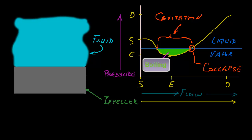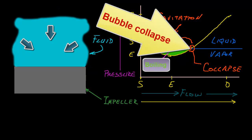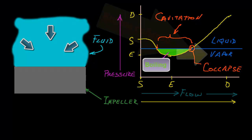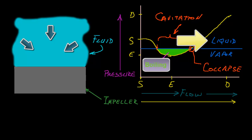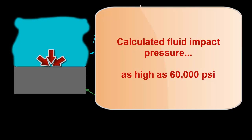Similar to the collapsing balloon, as the pressure of the fluid increases during the pumping cycle, at some point the vapor pressure inside the gas bubble is unable to support the external fluid pressure of the surrounding liquid. At that point, the gas bubble collapses or implodes under the pressure — in other words, the gas bubble vapor quickly changes phase back to a liquid state. The collapsing gas bubble results in a high-velocity, localized fluid-impact shockwave on the surface of the part. By some estimates, that fluid impact pressure is calculated to be as high as 60,000 PSI.